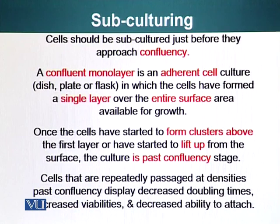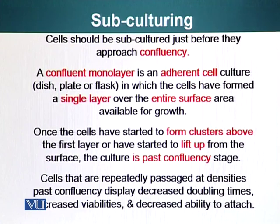Cells that have repeatedly been passaged at densities past confluency display decreased doubling times — so they are slower to divide — decreased viabilities, meaning they start to die off, and decreased ability to attach to a substrate. So you need to make sure that your cells are passaged regularly in order to keep them viable and healthy.